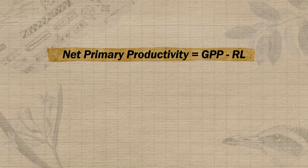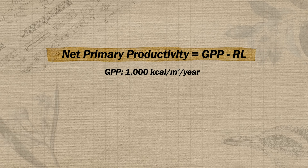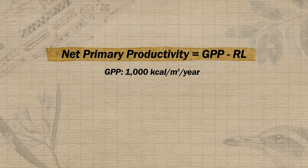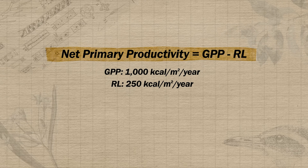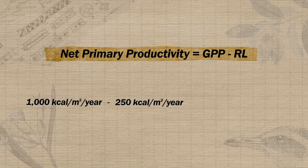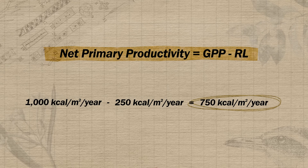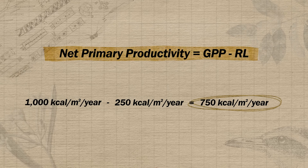If you've already watched the unit one review video, you've seen this clip on calculating net primary productivity — but there are additional practice problems in the math section of the APES Ultimate Review Packet. For example, if a forest ecosystem has a gross primary productivity of 1000 kilocalories per meter squared per year and a respiration loss of 250 kilocalories per meter squared per year, we subtract 250 from 1000 to get a net primary productivity of 750 kilocalories per meter squared per year.